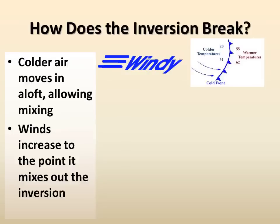There either needs to be an increase in wind and or colder air moving in aloft for an inversion to break. The colder air aloft needs to be cold enough that it is more dense than the cold air trapped at the surface, so that the surface air can rise and allow mixing to occur. Cold fronts and troughs are excellent at breaking up inversions because they are generally associated with stronger winds as well as colder temperatures.